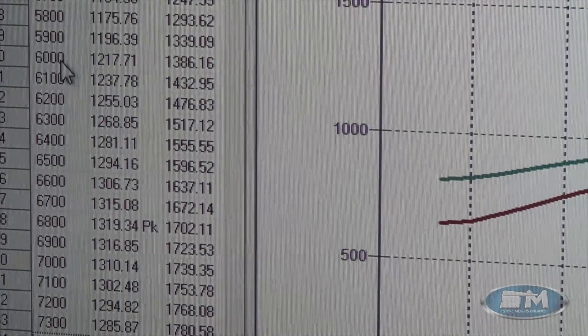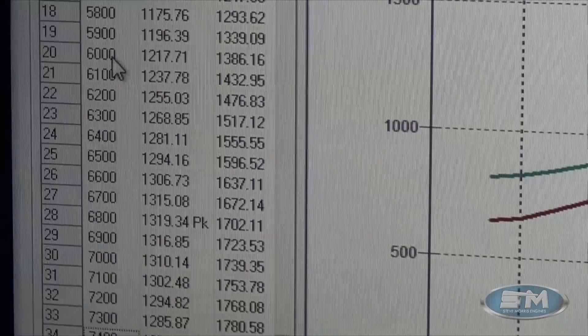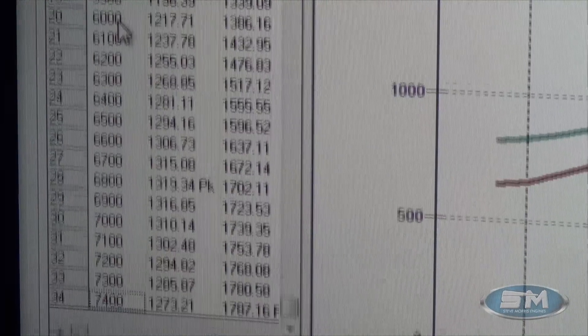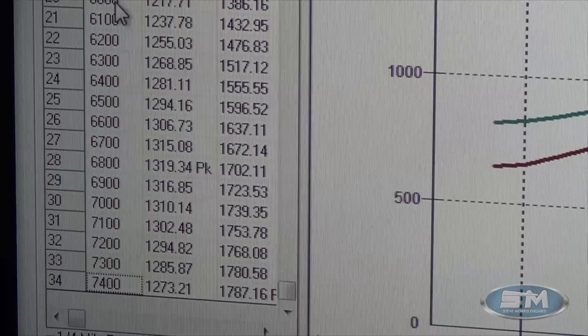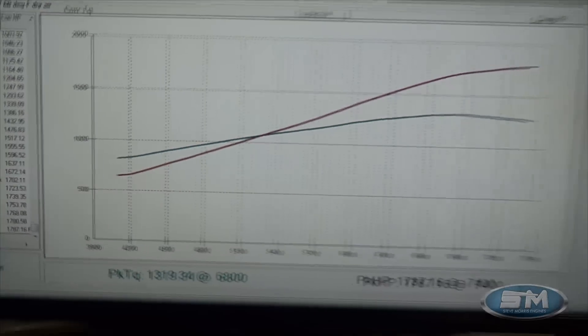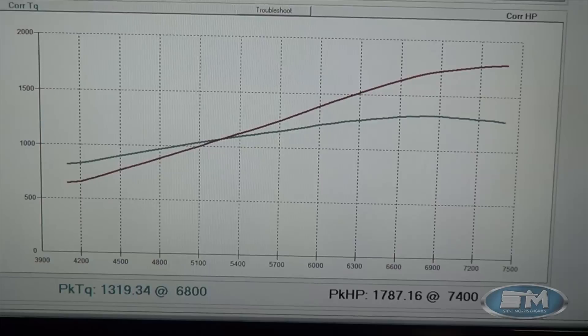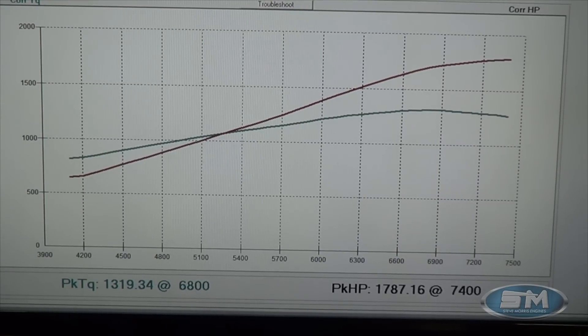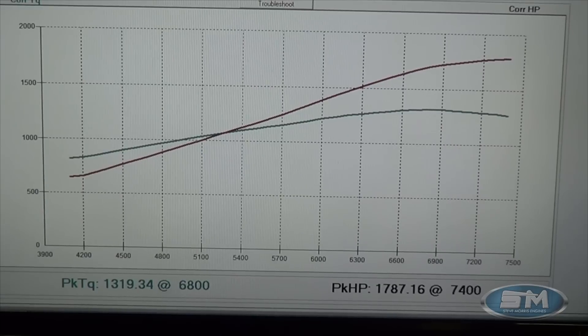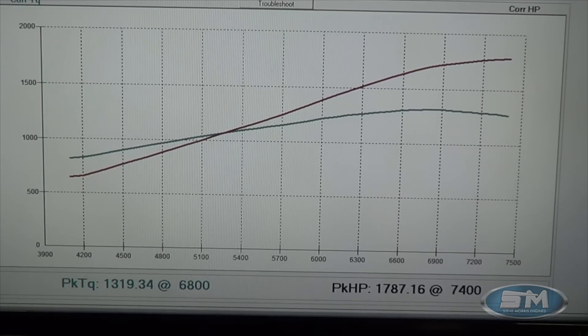And then it keeps going all the way up to 7,400 where it makes a peak horsepower of 1,787. And it looks like it would keep going and sort of carry that horsepower for just a little bit there, another 100 or 200 RPM, but just pulled back on it there because it wasn't RPM-ing anymore on the dyno.